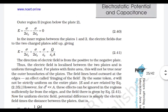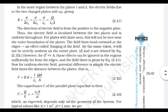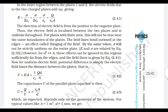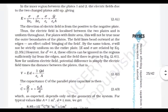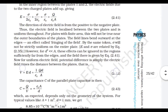The electric field is localized between the two plates and is uniform throughout, as seen by the uniform parallel field lines. For plates with finite area this will not be strictly true. Near the outer boundaries, the field lines bend outward at the edges — this effect is called fringing of the field.